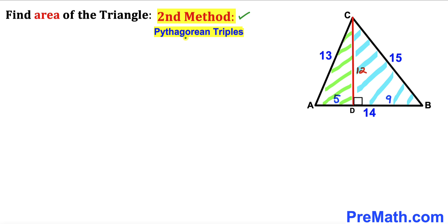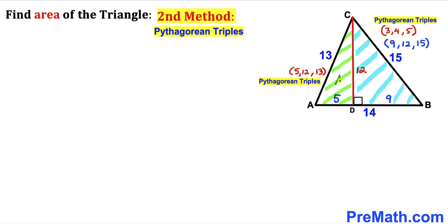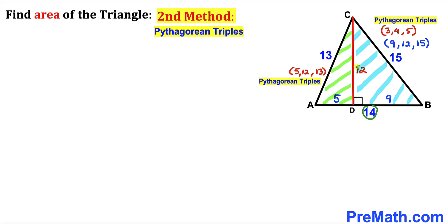Now let me show you the second method using Pythagorean triplets. Triangle ABC has been divided into two right triangles: triangle ADC and triangle BDC. Triangle ADC represents the Pythagorean triplets 5, 12, and 13. Triangle BDC represents the triplets 3, 4, 5 — multiplied by 3 across the board to give 9, 12, and 15. So AB is the base and CD is the height.